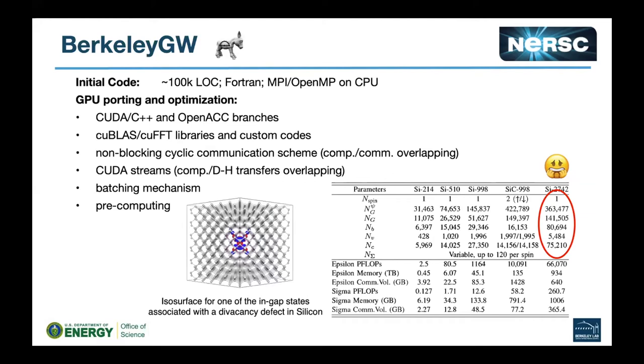Some of the techniques we used to optimize this code to make it efficient include the non-blocking cyclic communication scheme, the use of CUDA streams, and a batching mechanism. I will not go into all the details but I will touch on the communication scheme and some optimizations we did for Sigma GPP.